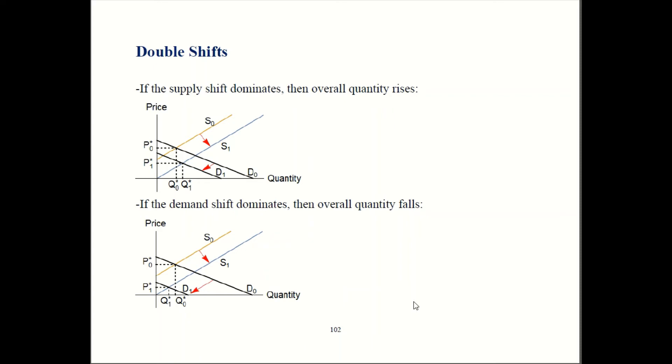So in our top graph, I drew a big supply shift and a smaller demand shift. So we're starting out on old supply. That's here, S0. And we have old demand, D0. So they meet over here. That's our old equilibrium.